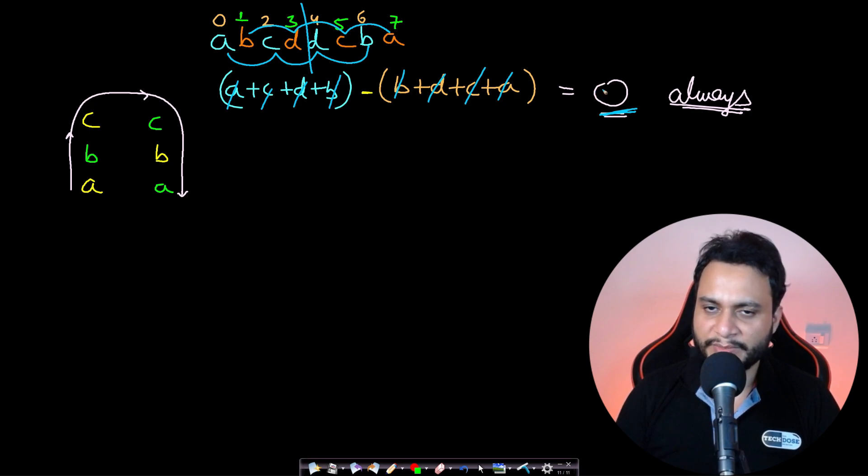Zero is divisible by 11, therefore we can say that any even length number which is a palindrome will always be divisible by 11. Since prime palindromes of even length are all subsets of even length palindromes, the prime palindromes will always be divisible by 11.